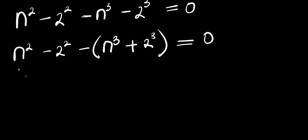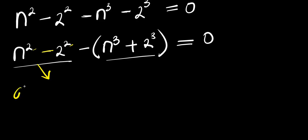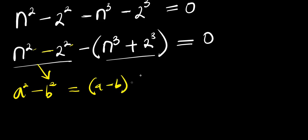At this point, you are going to expand each of these expressions. Using the difference of two squares: if you have a² - b², this is (a - b)(a + b).